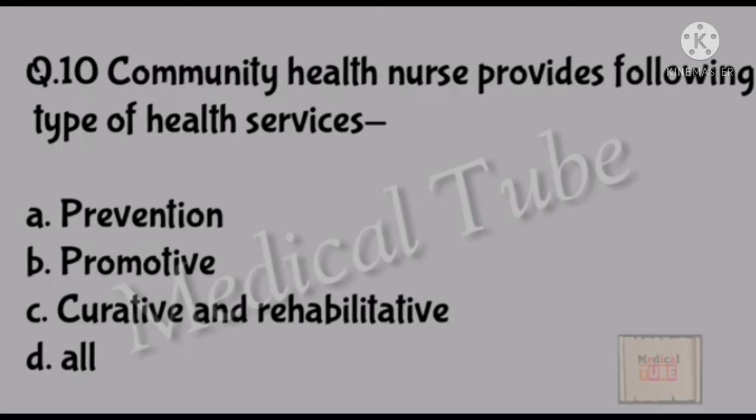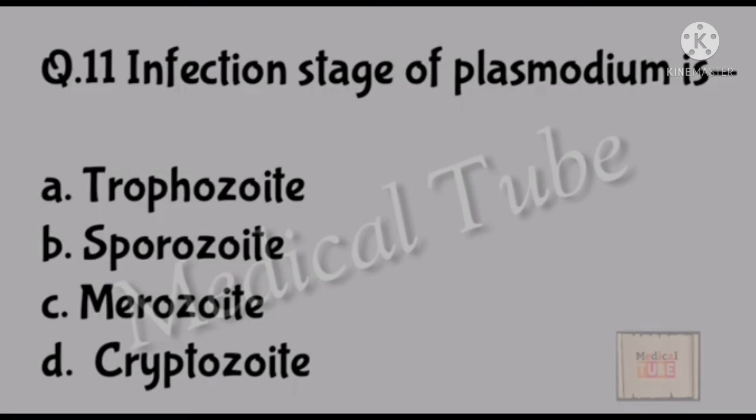Ten number question: Community health nurse provides the following type of health service. Correct answer is D: All. Eleven number question: Infection stage of plasmodium is? Correct answer is B: sporozoite.